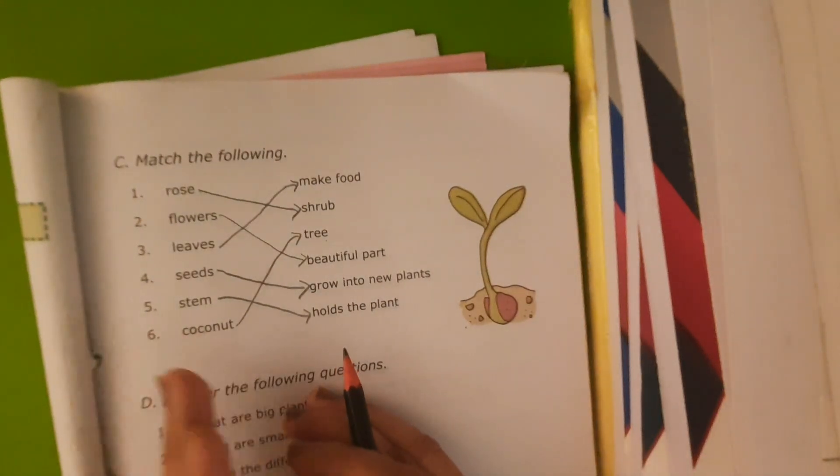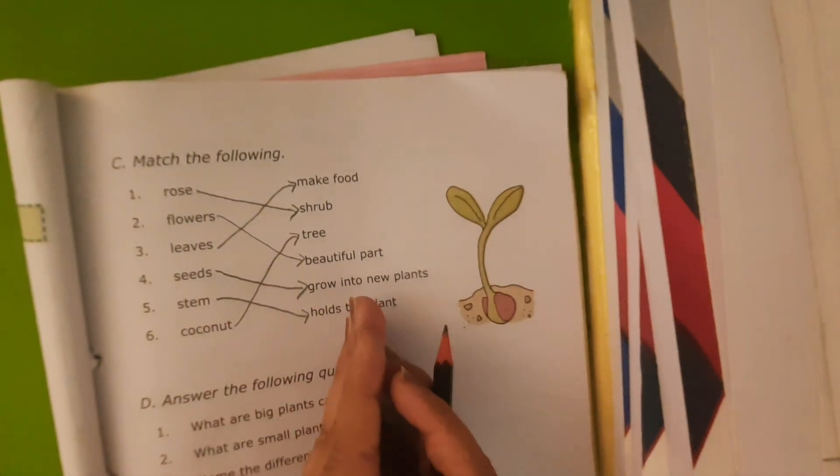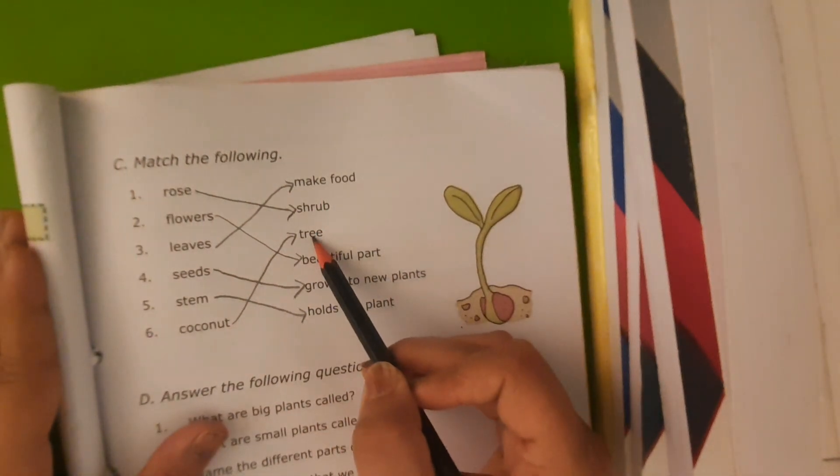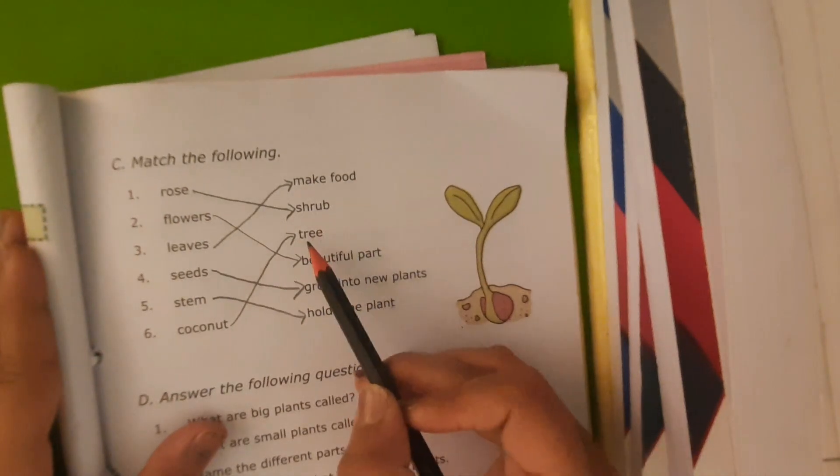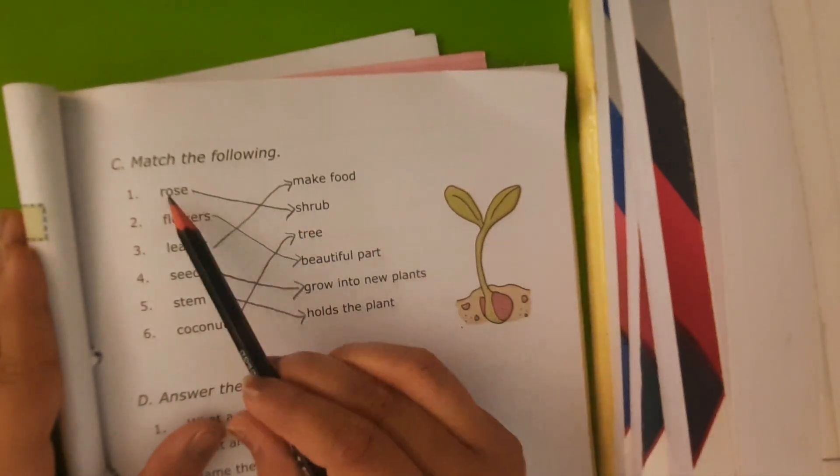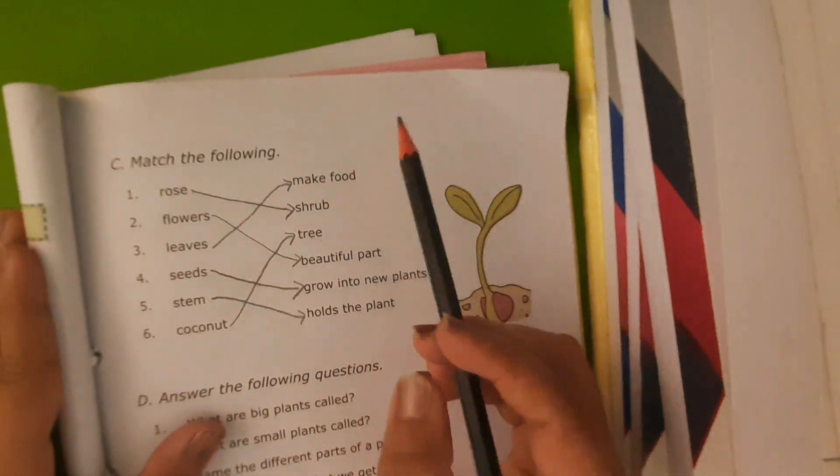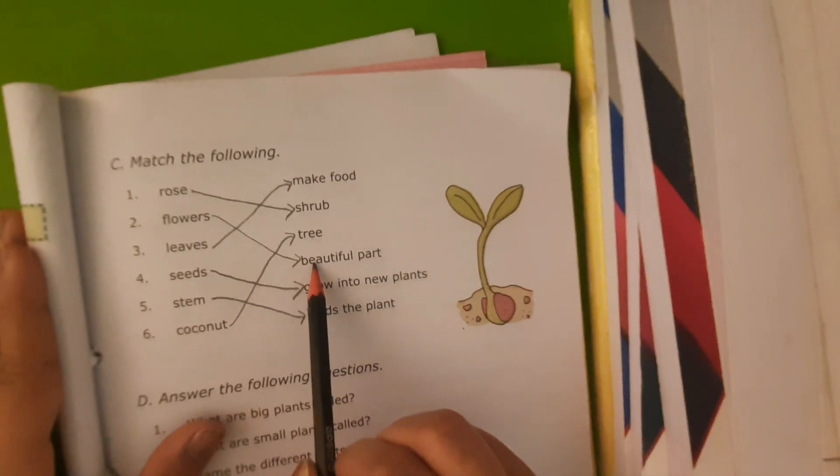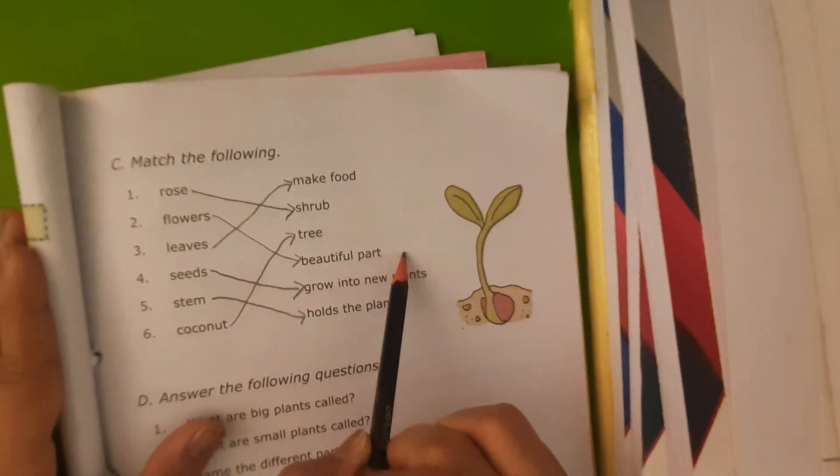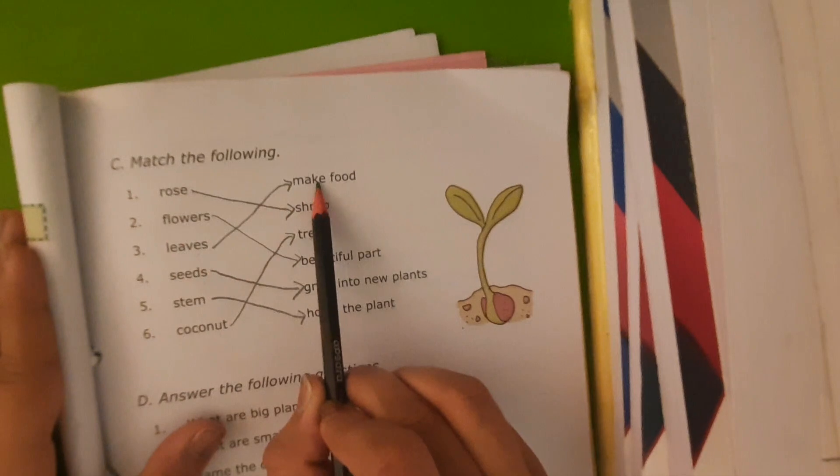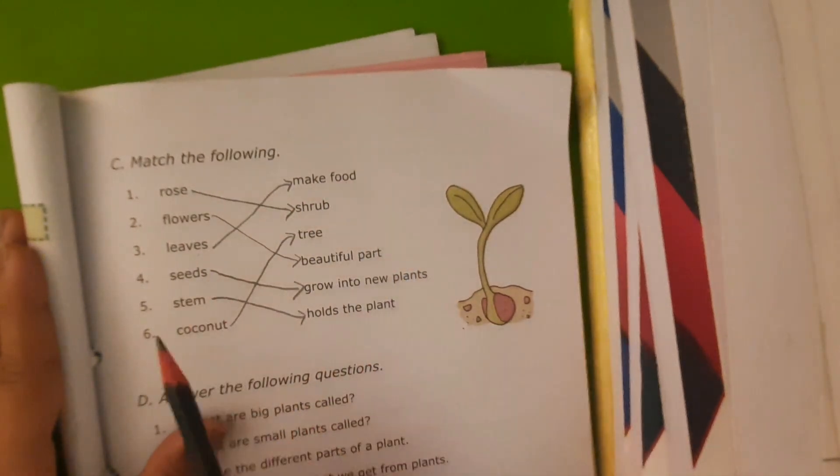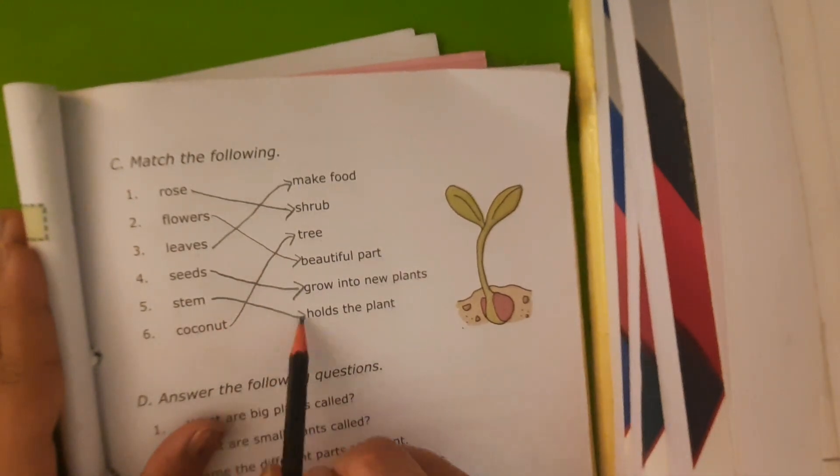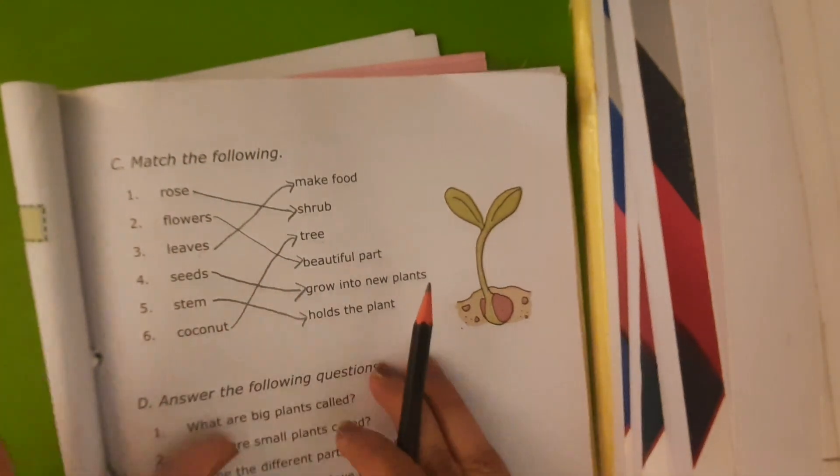Here there are two examples, a tree and a shrub. Coconut is a tree and rose is a shrub. These are the parts of the plant. Flower is a beautiful part of a plant. Leaves make food for a plant. Seeds grow into new plants. Stem holds the plant. So this is matching.